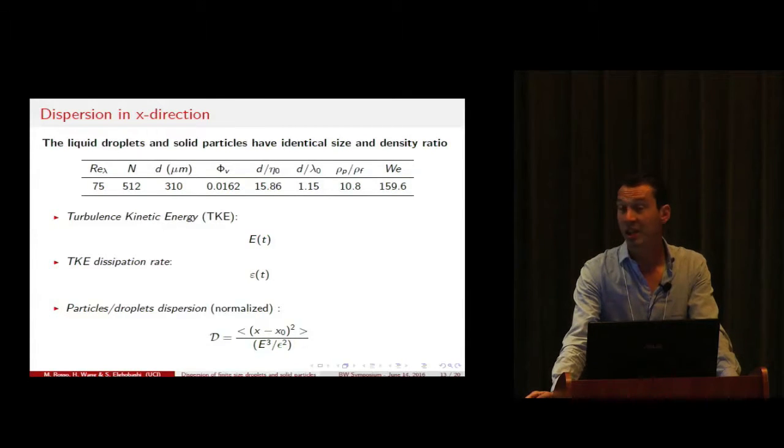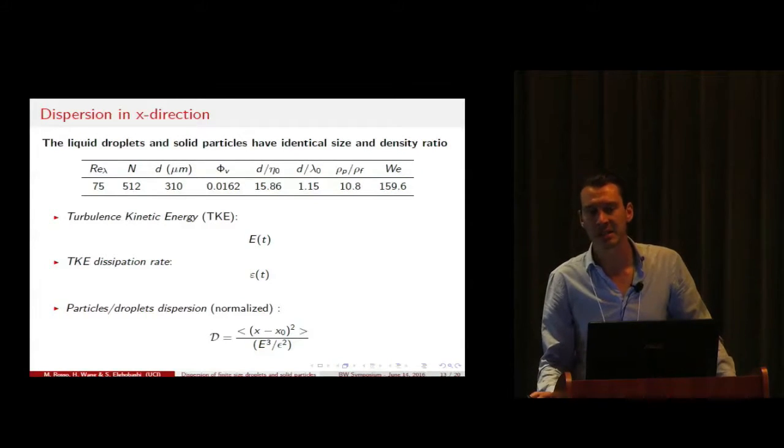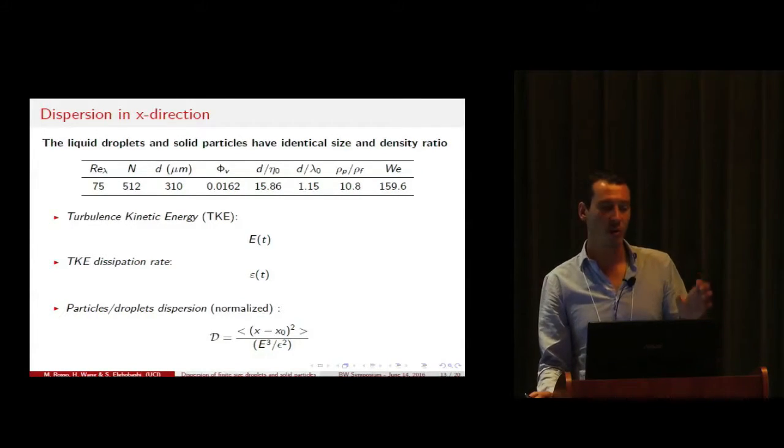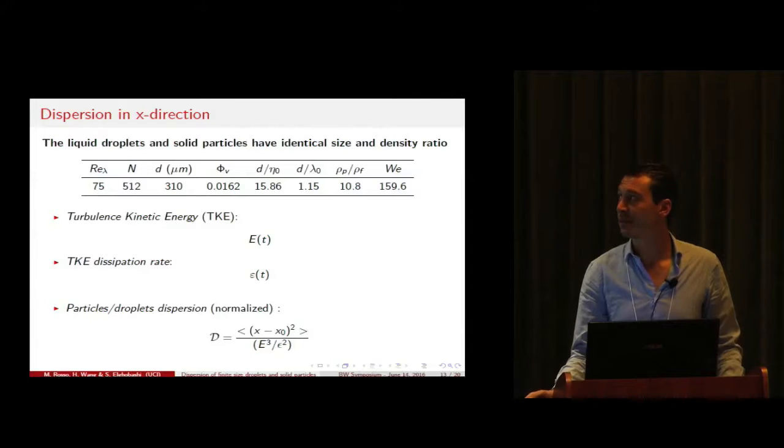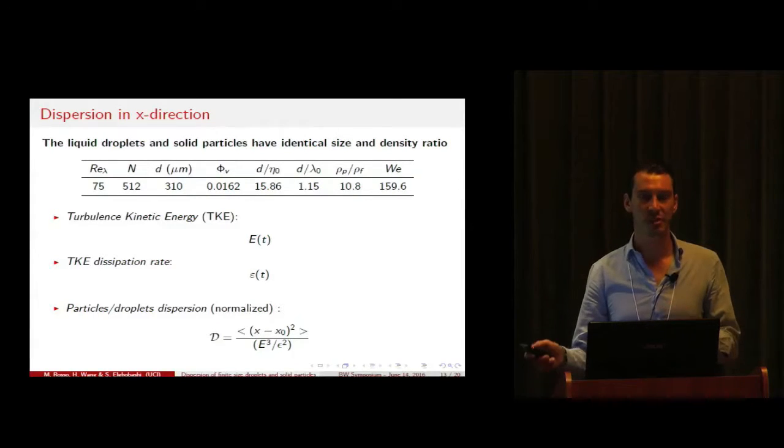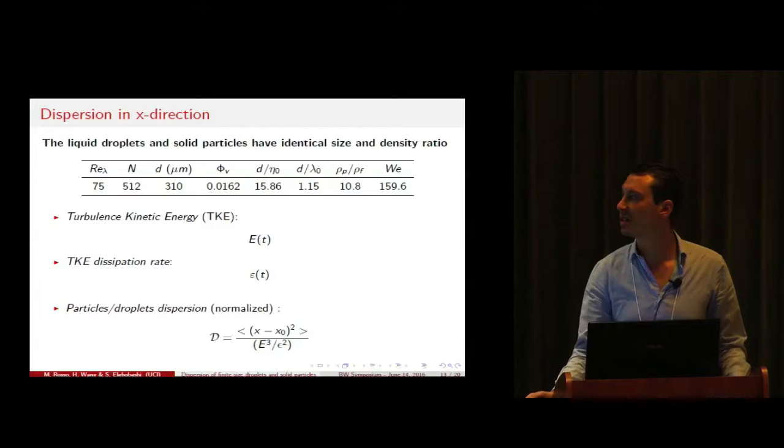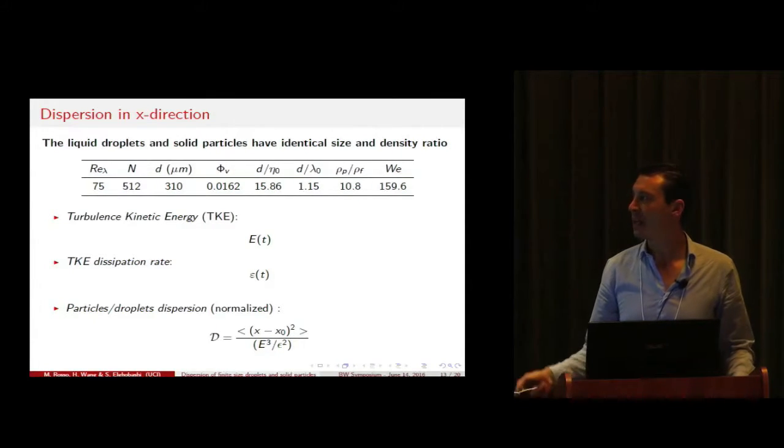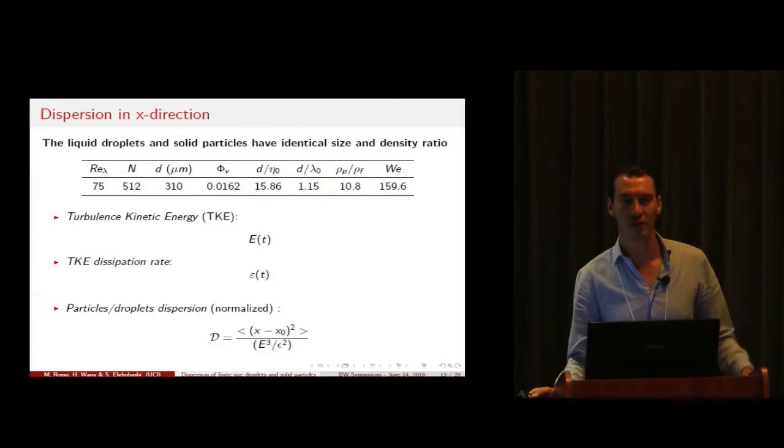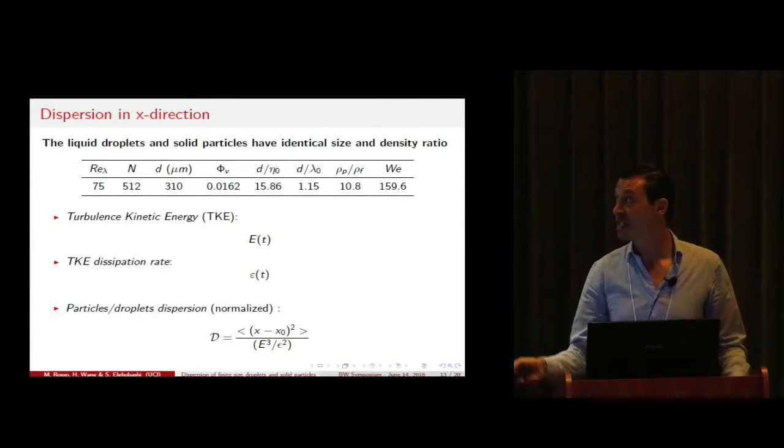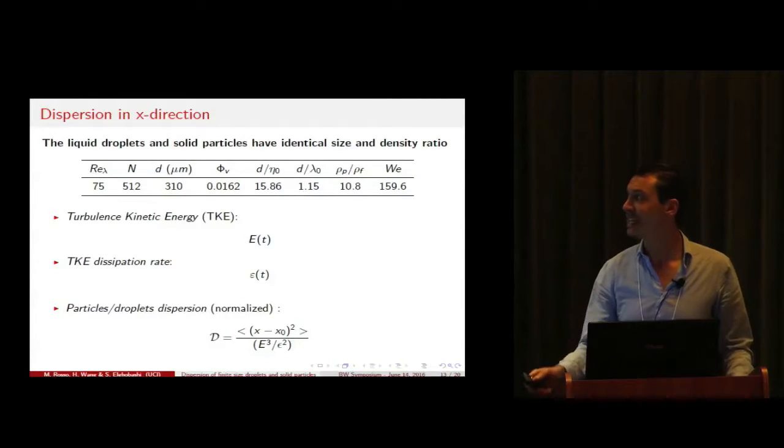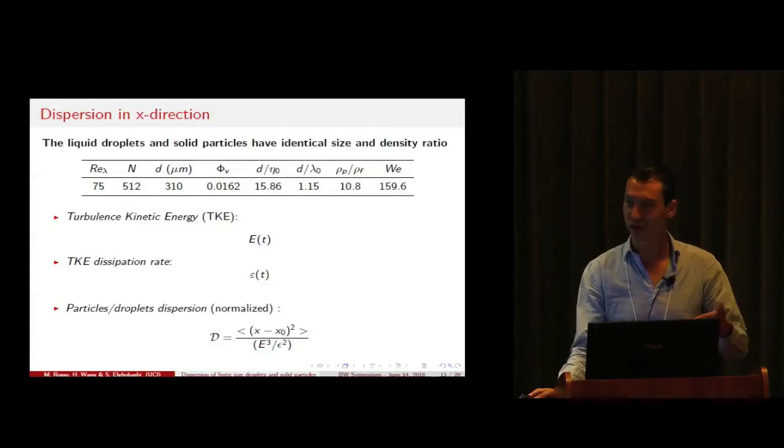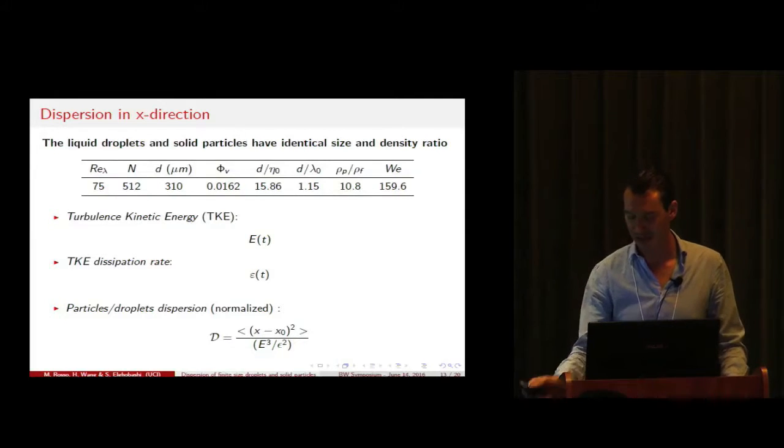Regardless of the case, we use a cubical domain discretized with 512 grid points per direction, and we initialize an isotropic turbulent field with Reynolds lambda 75. Initially the droplets have a spherical shape with the same diameter as the particles. The diameter is comparable with the initial Taylor microscale of the turbulence. The density ratio between the dispersed phase and the carrier flow phase is kept at 10, which is more a limitation of the immersed boundary method since we are able to tackle much larger density ratios with our ghost fluid and level set method coupled with the flow solver.